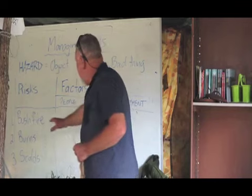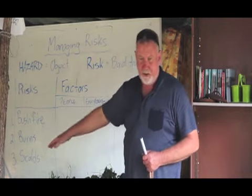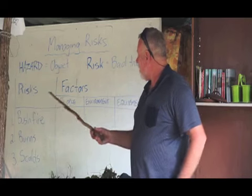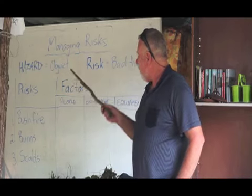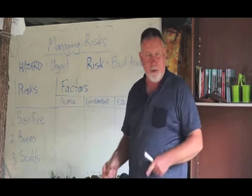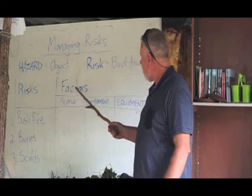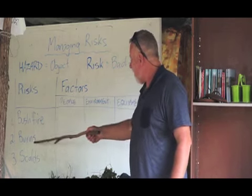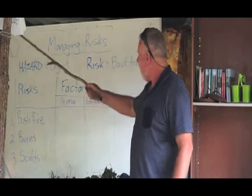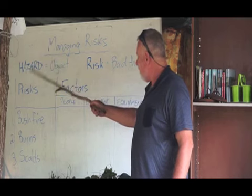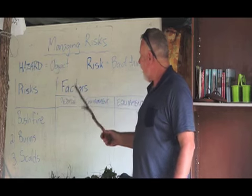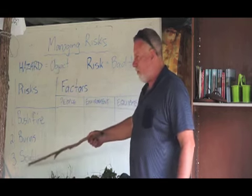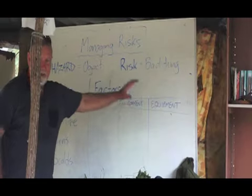Now this is the important one. What we need to do is think about what are the things that could happen - what are the factors that could lead to these bad things happening? With the fire, what are the factors that could lead to a bushfire or a burn or a scald? People factors, environment factors, equipment.